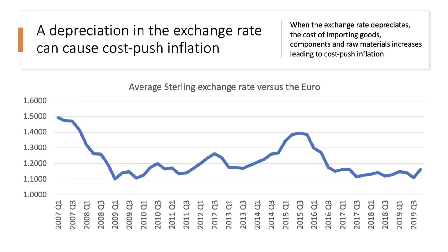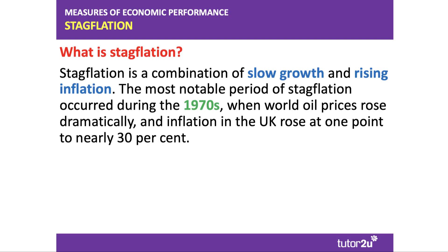A depreciation in the exchange rate increases the cost of importing goods, component parts, and raw materials, and that can lead to cost-push inflation. Some of that might be temporary — a one-off increase in prices — but sometimes a weak exchange rate can persist. Looking at this chart showing the average sterling exchange rate against the euro, in 2015-2016 the pound fell quite sharply — particularly around the Brexit referendum — by upwards of 15 percentage points or more against the euro, which increased the cost of imported products coming into the UK.